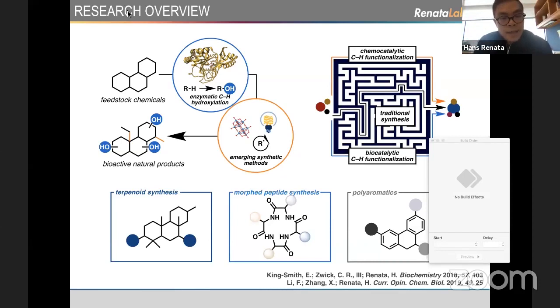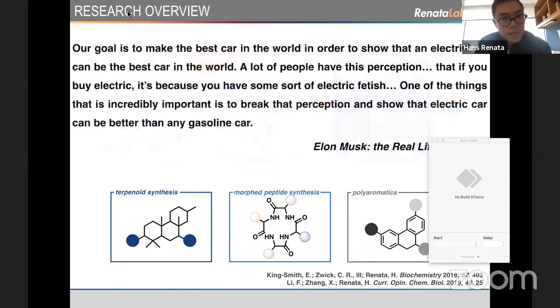Phil Barron likes to think that things are better if you include some Elon Musk reference. This quote is taken from a documentary: 'A lot of people have this perception that if you buy electric, it's because you have some sort of electric fetish. One of the things that is incredibly important is to break that perception and show that electric car can be better than any gasoline car.' I think similarly, there's still this perception that if you do biocatalysis, it's because you have some sort of catalytic fetish. I think it's important that we break that perception and show that biocatalytic synthesis or chemoenzymatic synthesis can offer a lot of advantages over traditional synthesis.